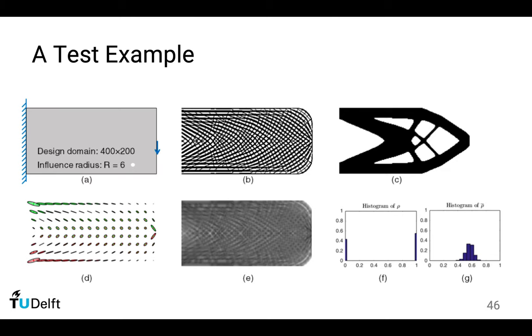And this is a test example. This top left is the design domain. It's 400 times 200 elements. Figure B is the optimized microstructures from this local volume constraint topology optimization. And on the right-hand side, it is the standard topology optimization. There's a very big difference. In standard topology optimization, we have distinct empty and solid regions. And in the local volume constraint topology optimization, we have microstructures satisfying the local volume constraint everywhere.